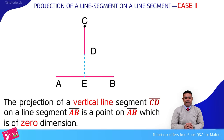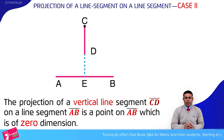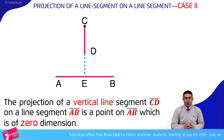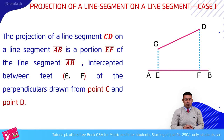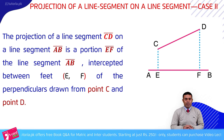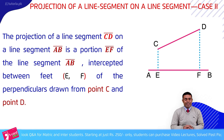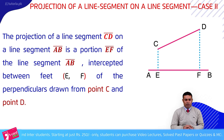The projection of a vertical line segment CD on a line segment AB is a point on AB, which is of zero dimension. In terms of C, we have to draw a perpendicular line. In terms of D, we also have to draw a perpendicular line.